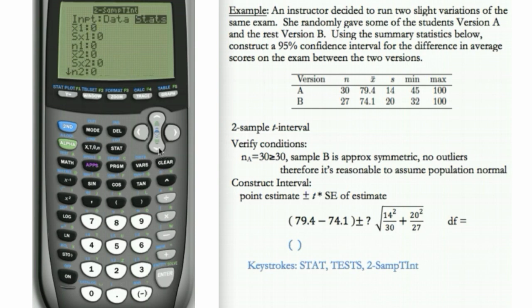And now you can enter in the summary stats. So x bar 1 is, we're using A, so that's 79.4. And its standard deviation is 14. And its N is 30.